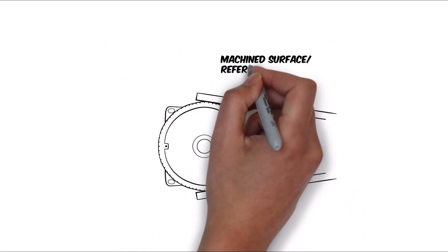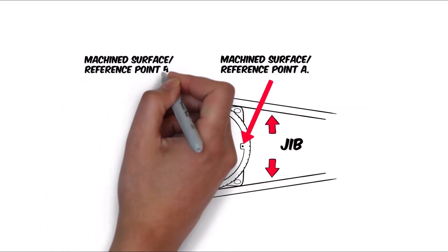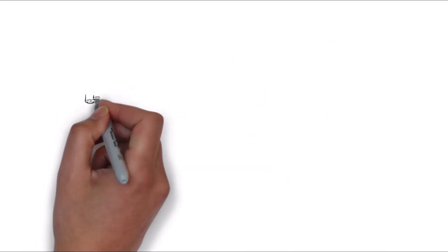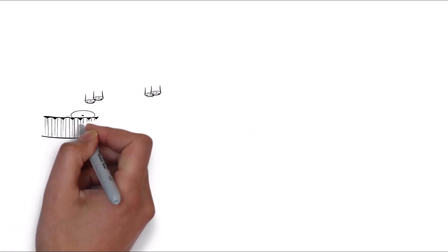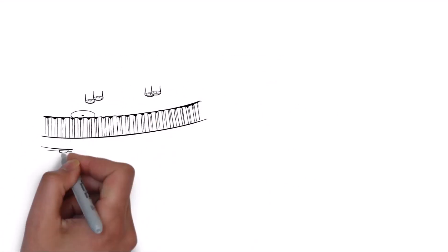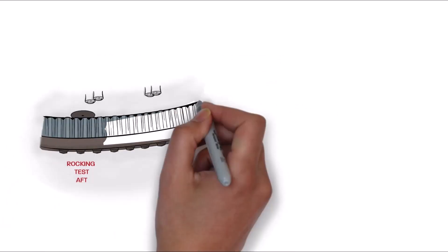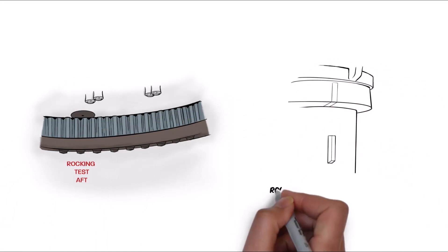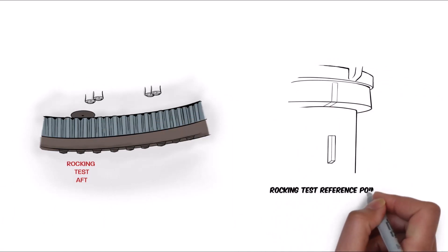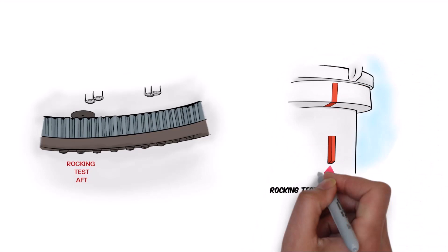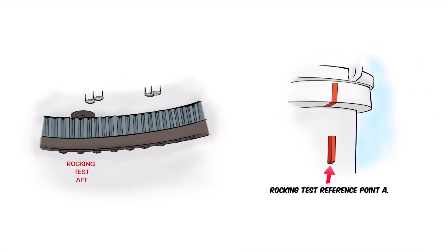Readings need to be taken from fixed reference points which are normally internal but can be external. Leading manufacturers set out that two points need to be marked: one directly under the center of the jib and the other opposite this. A machined surface is often furnished for this purpose. Other manufacturers may set out different requirements.